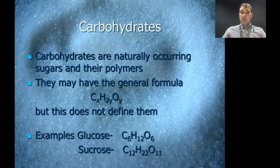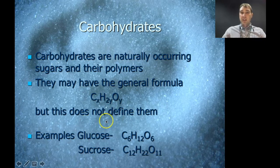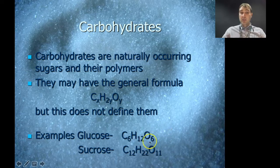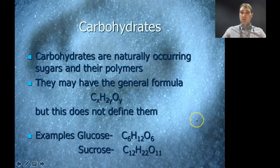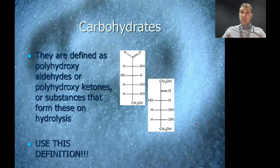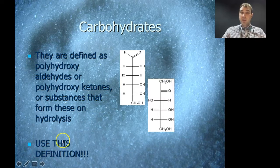So what are carbohydrates? Carbohydrates are naturally occurring sugars and their polymers. They may have the general formula C6H2YOY, but this isn't what defines them. Some common examples are glucose, which is the main unit of sugar your body runs on, and sucrose, which is table sugar — made up of a sucrose and a fructose molecule joined together. The key definition we're going to use is: polyhydroxy aldehydes or polyhydroxy ketones, or substances that produce these on hydrolysis.